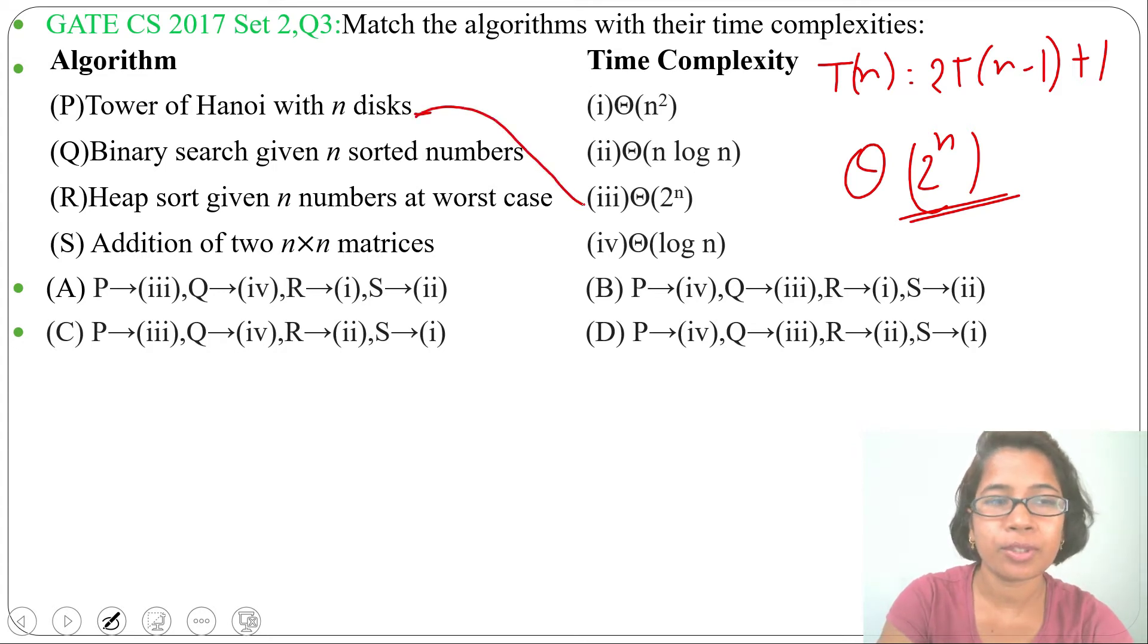Check in which option P is related with 3. In option A, P is related with 3. In option B, P is related with 4, so this is wrong. Option C, P is related with 3, so this might be correct. Option D, P is related with 4, this is wrong. We rule out options B and D. We just need to check options A and C.